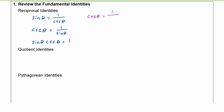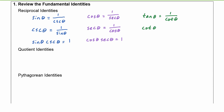We know that cosine of theta is equal to one over the secant of theta, which means that secant of theta is equal to one over the cosine of theta, which means that cosine theta times secant theta is equal to one. Tangent of theta is equal to one over the cotangent of theta; therefore cotangent theta is equal to one over the tangent of theta. So then when we multiply tangent theta times cotangent theta, we know we're going to get one.